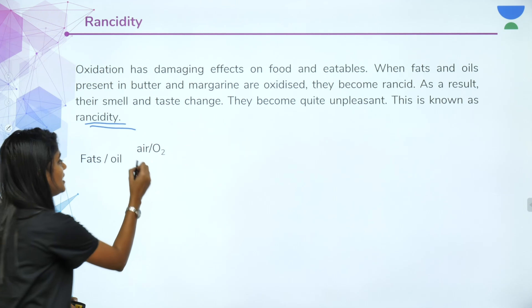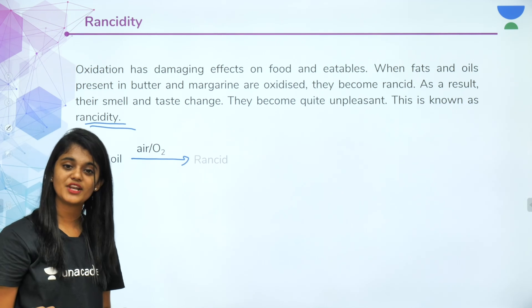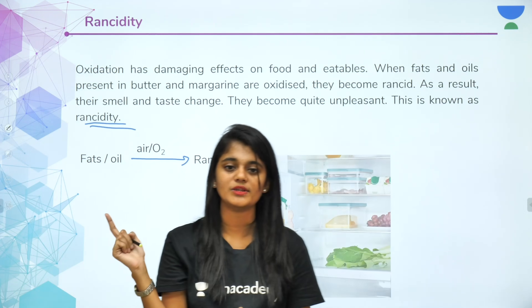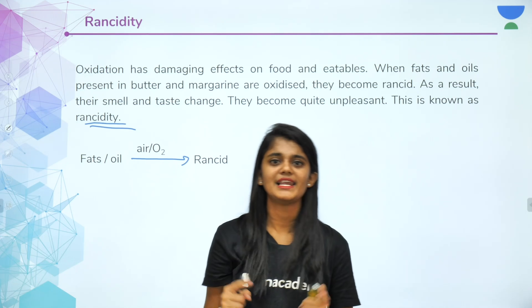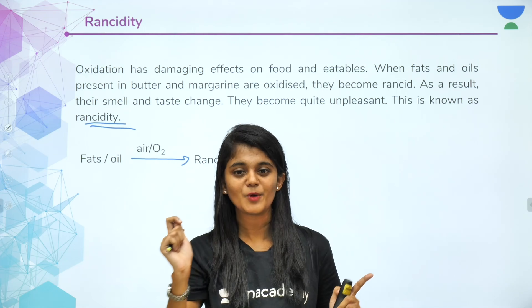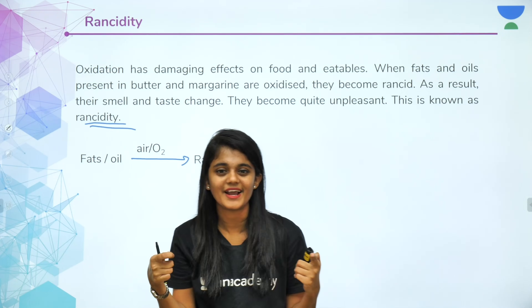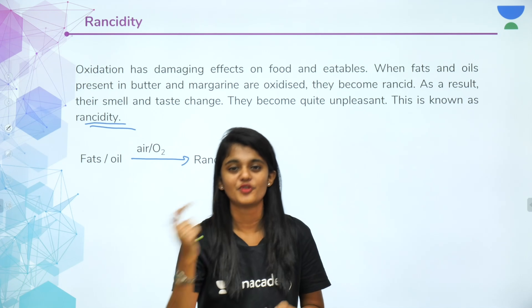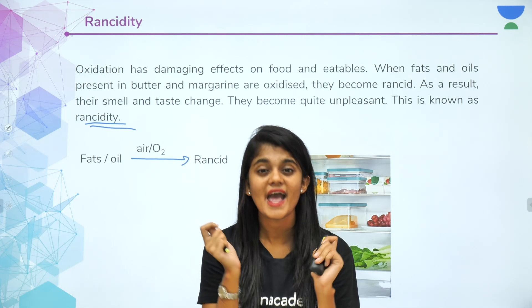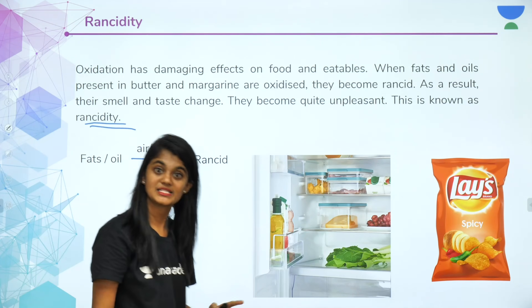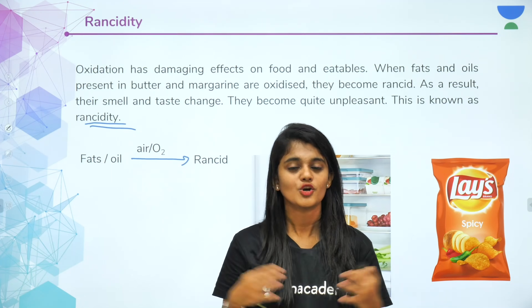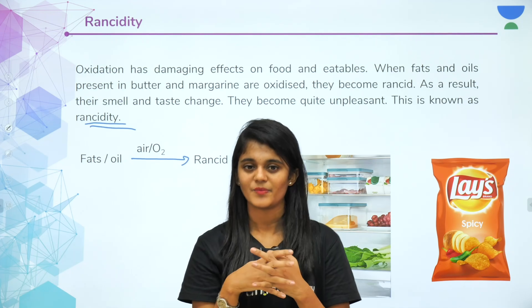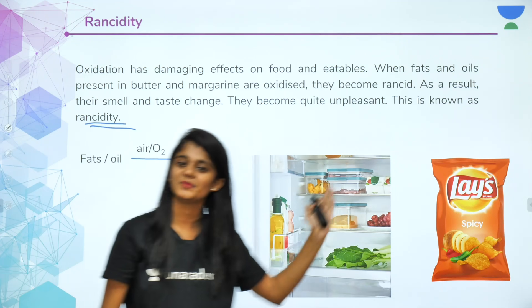Rancidity is when fats or oils react directly with atmospheric oxygen, causing food to spoil — changing its taste and smell. To prevent rancidity: first, packaging is airtight and filled with nitrogen gas instead of air, protecting the food from atmospheric oxygen. Second, you keep food in the fridge — cold storage reduces exposure to atmospheric oxygen and slows the oxidation process.